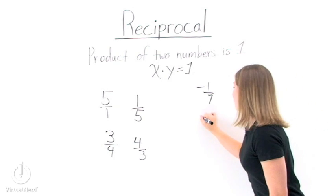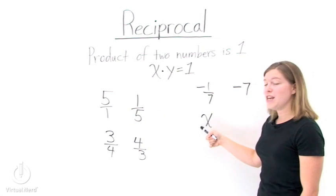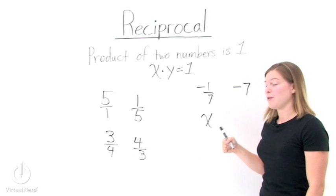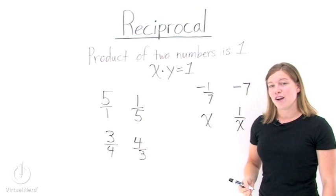Last one, x. Well, x is a whole lot like 5. All we need to do is put it over 1 and flip the fraction. So the reciprocal of x is just 1 over x.